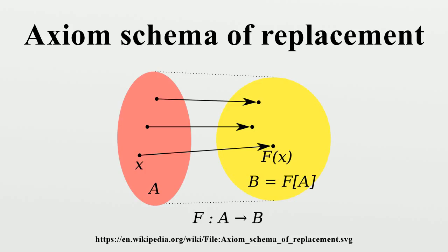Axiom schema of collection. The axiom schema of collection is closely related to and frequently confused with the axiom schema of replacement. While replacement says that the image itself is a set, collection merely says that some superclass of the image is a set. In other words, the resulting set B is not required to be minimal.